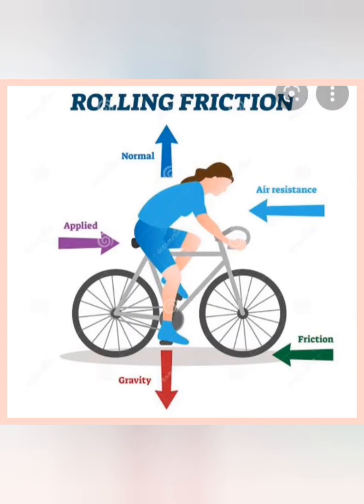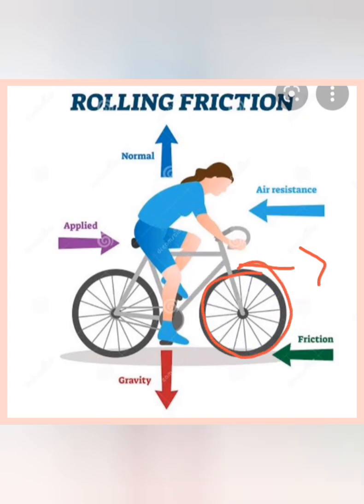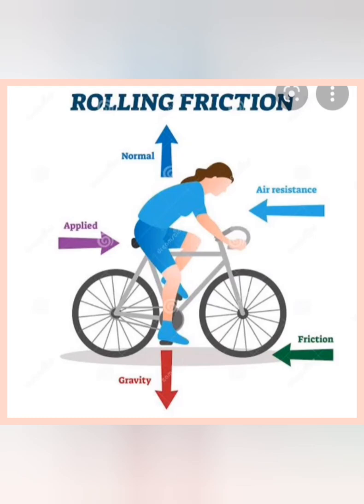Riding a bicycle is another example. When force is applied to move forward, the tires roll on the surface and friction acts in the opposite direction — that is the direction of rolling friction. A normal reaction force and gravity also act on the object, of course.